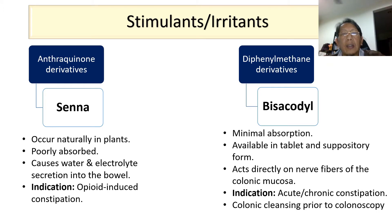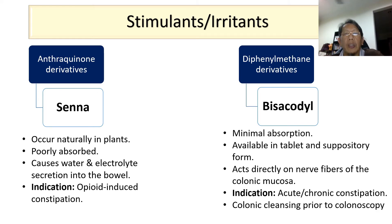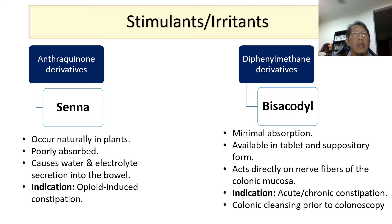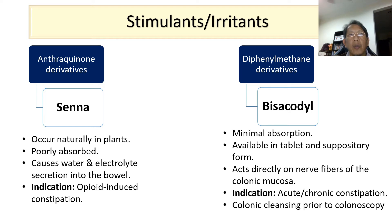Another stimulant drug is bisacodyl. Bisacodyl is also an over-the-counter medication used to treat constipation. Bisacodyl is known as a potent stimulant of the colon. It works by acting directly on the nerve fibers of the colonic mucosa. It is available as suppositories and also as enteric-coated tablets. Bisacodyl is indicated in acute or chronic constipation and is also used in hospitals to help patients empty the bowel before surgery or some examinations or treatments.